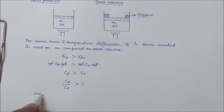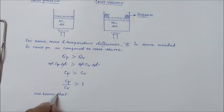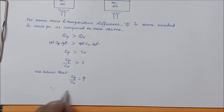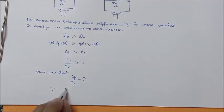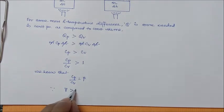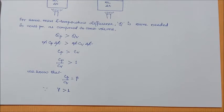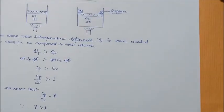Therefore, Cp divided by Cv is always greater than 1. We know that Cp/Cv is equal to gamma. Therefore, gamma is always greater than 1.